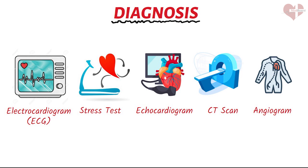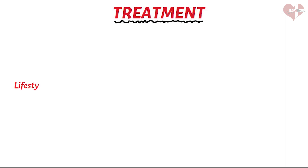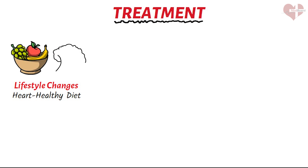If you are diagnosed with coronary artery disease, your healthcare provider will work with you to develop a treatment plan based on your individual needs and medical history. The goal of treatment is to reduce the risk of complications and improve your overall heart health. One of the most important aspects of treatment is making lifestyle changes, including adopting a heart-healthy diet. This may include eating more fruits, vegetables, whole grains, and lean proteins, while limiting saturated and trans fats, added sugars, and sodium.